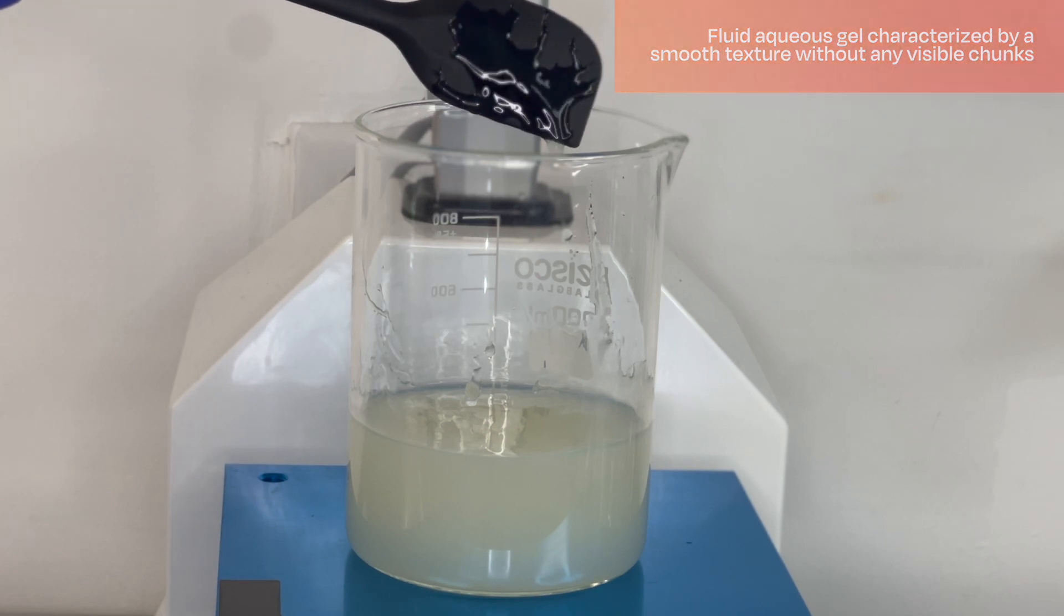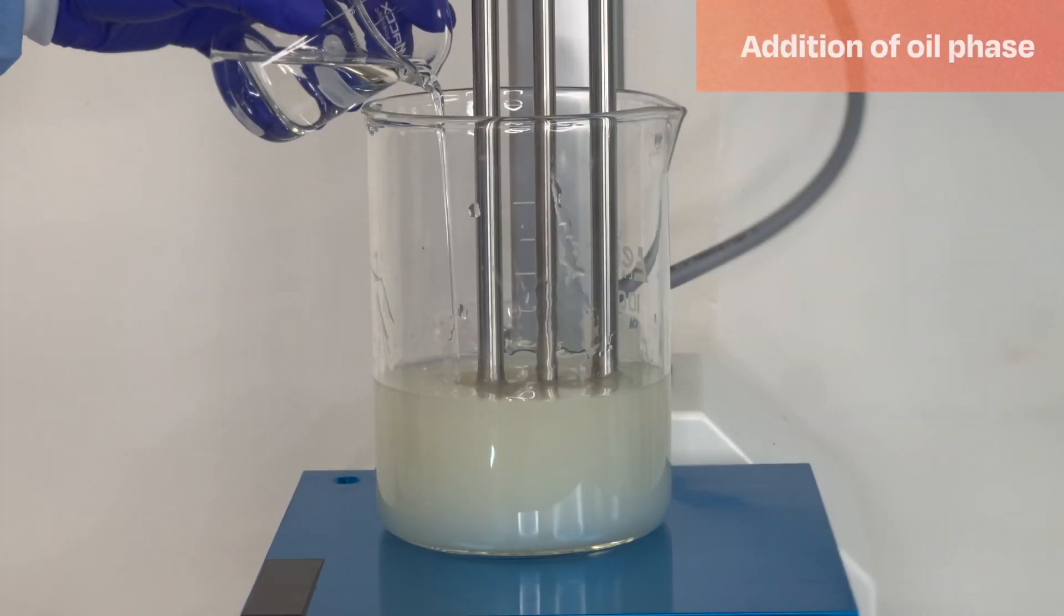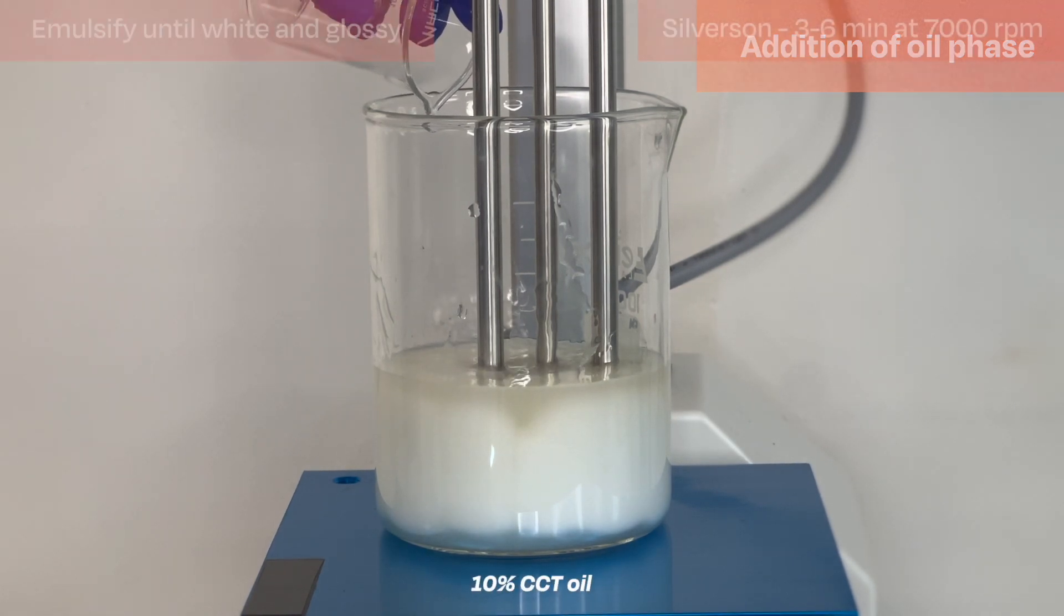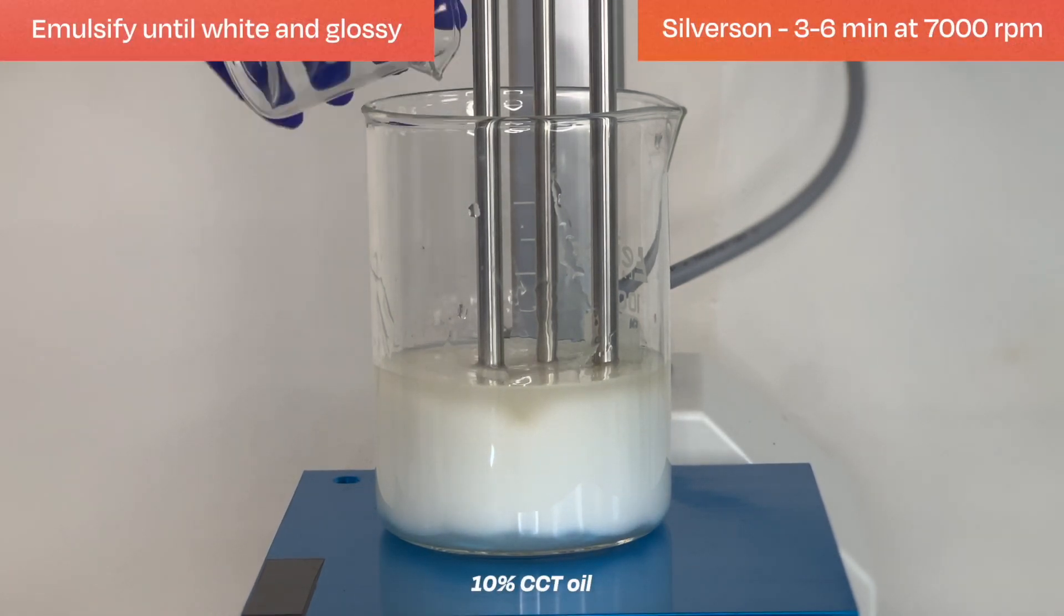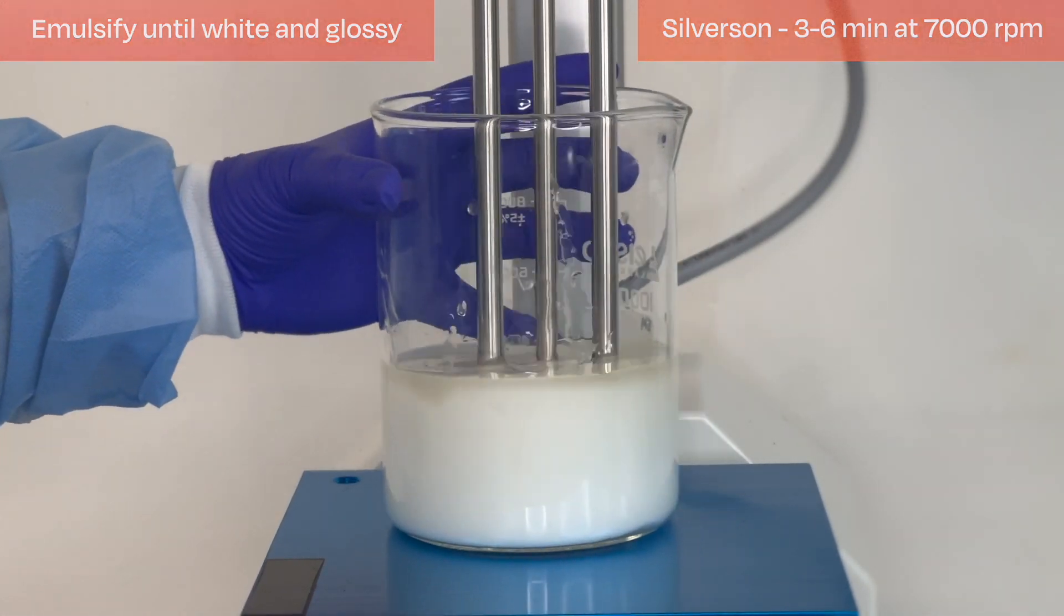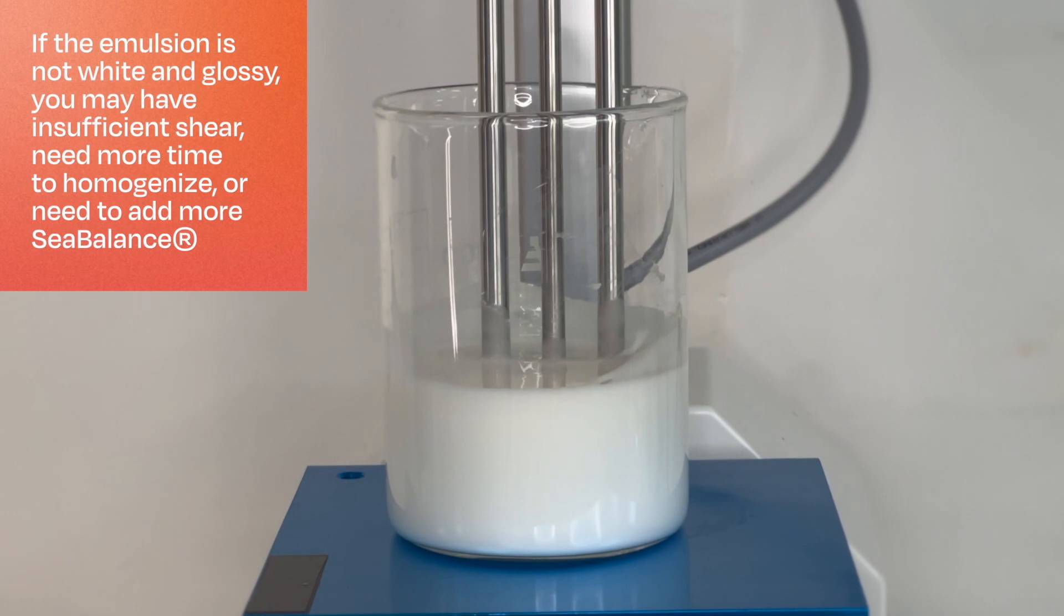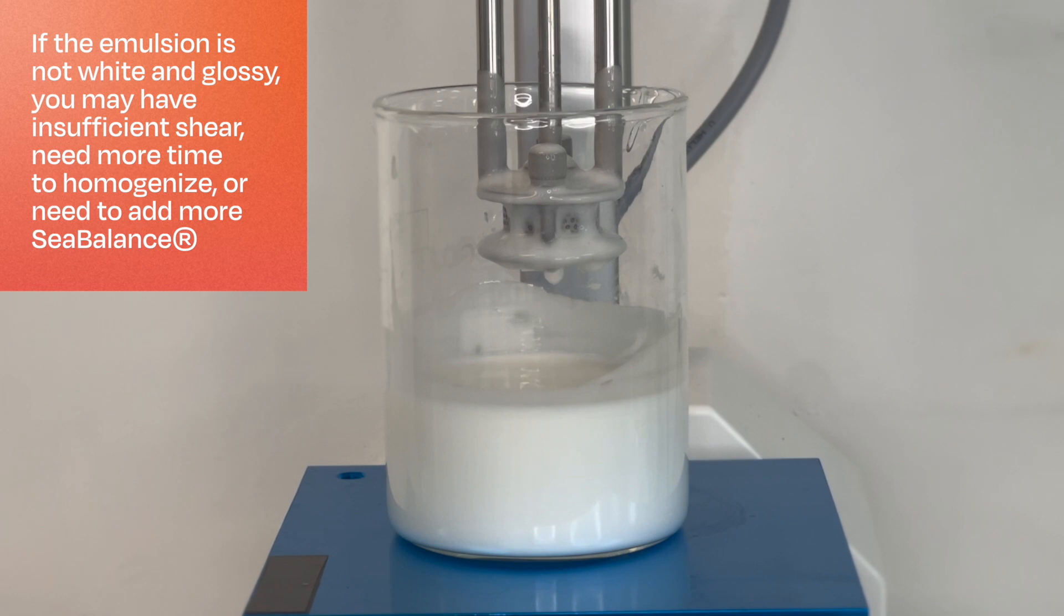Now let's prepare the emulsion. Add the oil phase into the water phase using high shear. Depending on the equipment used, this may take more time compared to typical emulsions. Homogenize under high shear stress until a smooth texture is attained. If the emulsion is not white and glossy, you may have insufficient shear, need more time to homogenize, or need to add more Seabalance.